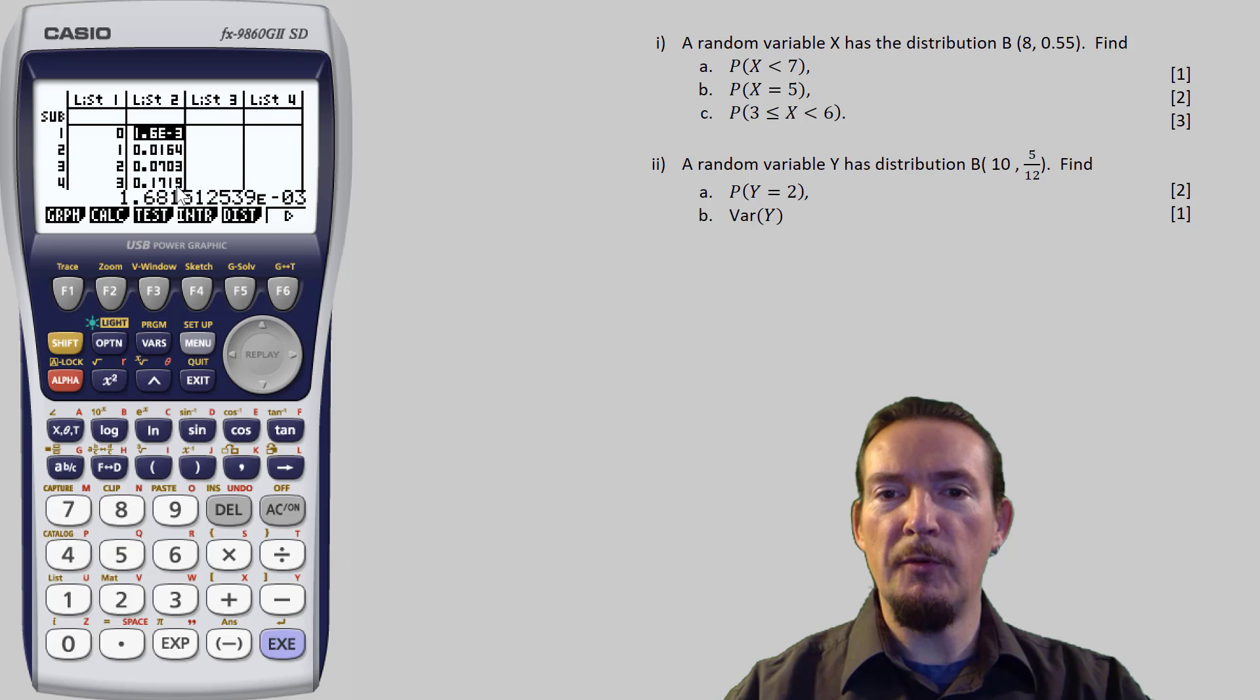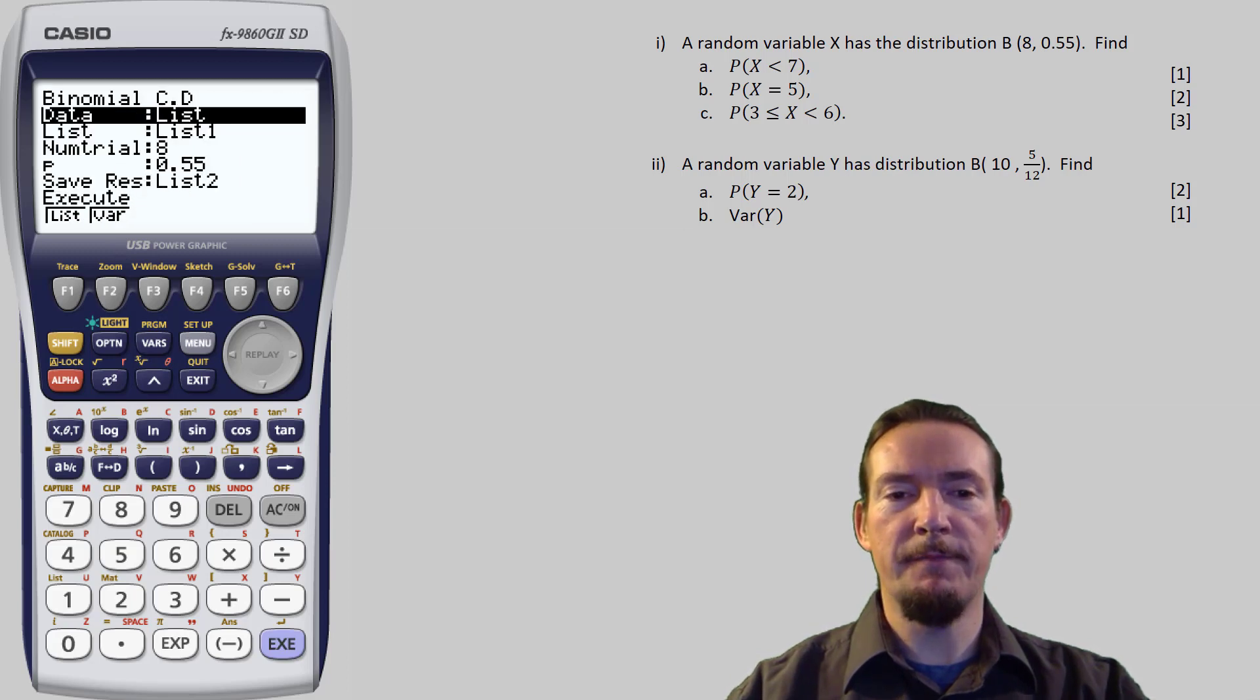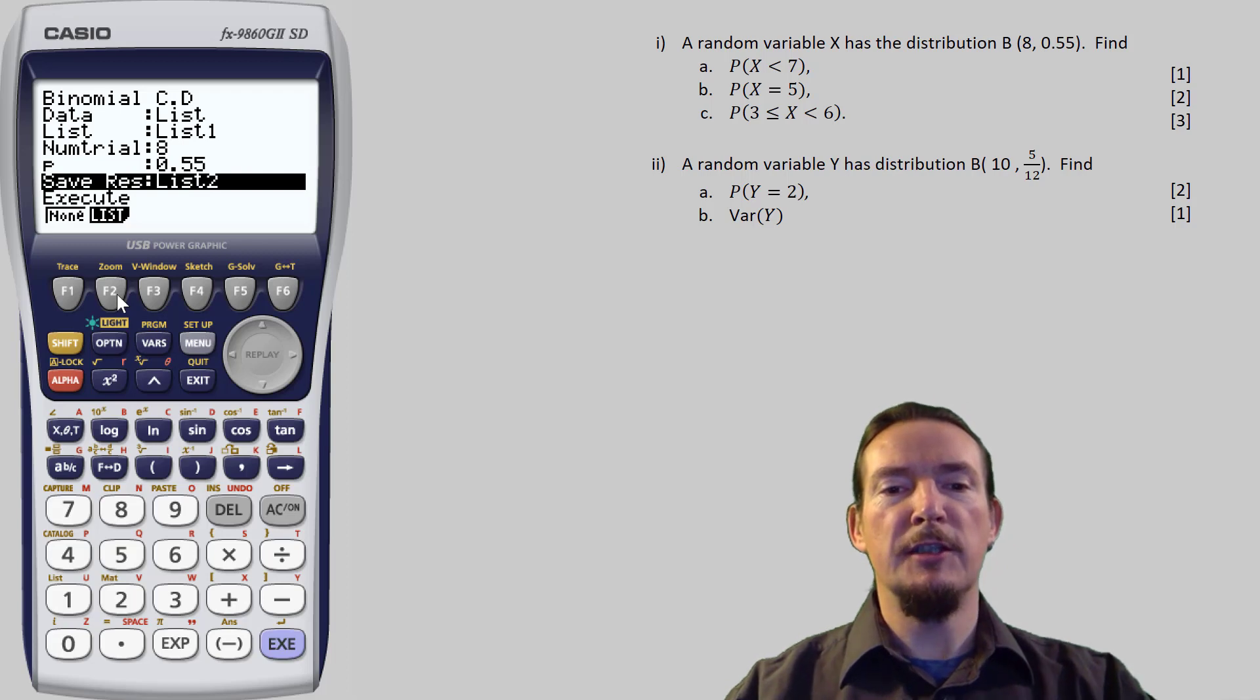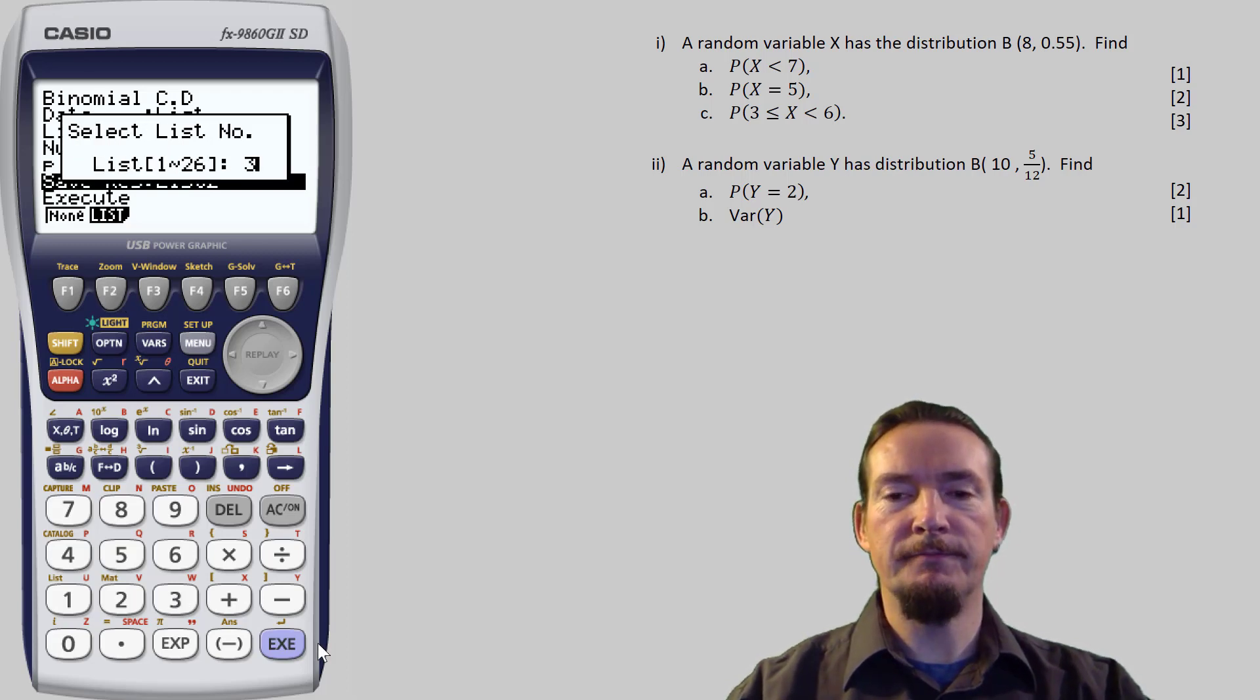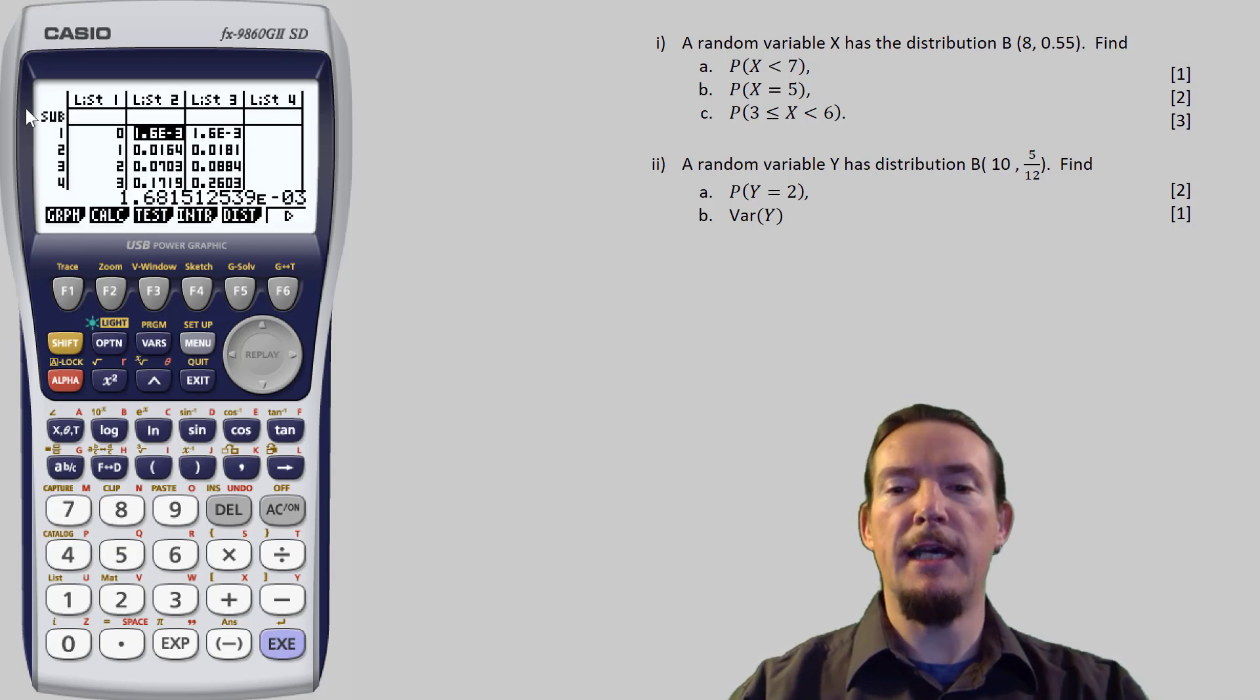Before we start answering the questions, though, I want to generate the cumulative binomial probabilities too, as some of the questions are asking for ranges of values. I can do this by again pressing F5 for the distribution, and F5 for binomial distributions, and this time we'll choose F2 for cumulative probabilities. You'll notice the setup table still contains all the data settings from the last time around, so I just need to change where the results need to be saved to. Now if I just left it as list 2, it would overwrite our previous results, so I'm going to change this to list 3 and execute. Again, better to exit and exit to get back to our main table before we attempt to analyse these results.